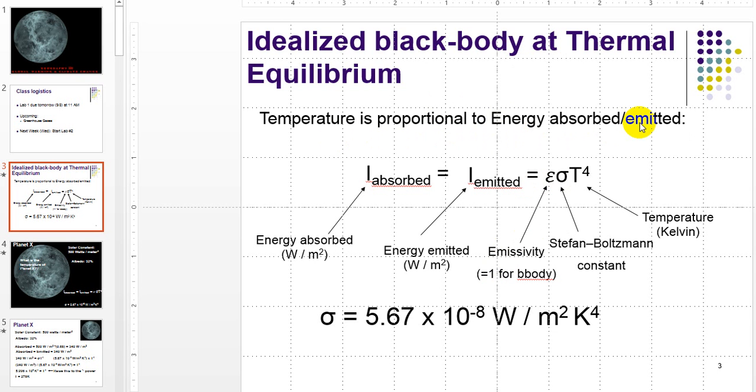When you're at thermal equilibrium, the amount of energy you're emitting because you have a temperature is the same as the amount of energy you're absorbing. Both can be related to your temperature, which is this T term raised to the fourth power in this equation, multiplied by the Stefan-Boltzmann constant, which is 5.67 times 10 to the negative 8 watts per meter squared per Kelvin to the fourth power.